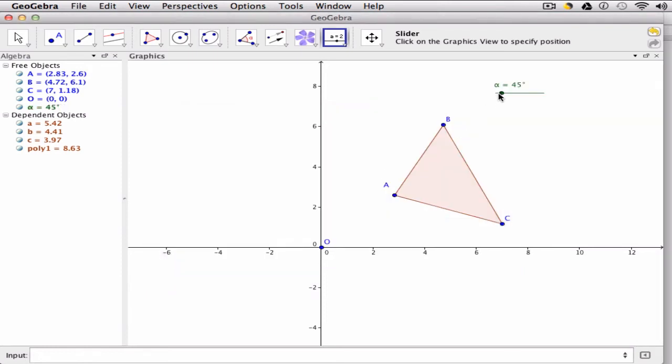And now I have a slider which I can change, but of course this won't do anything because nothing here is represented by this angle.